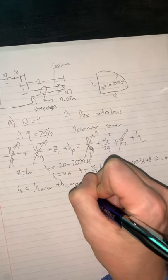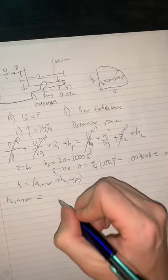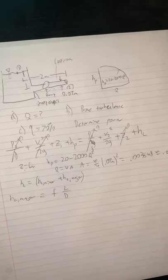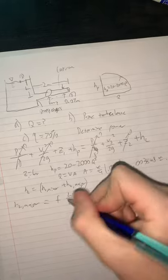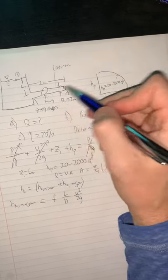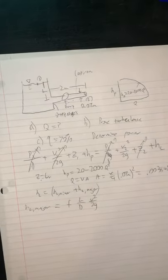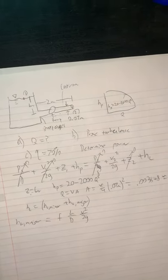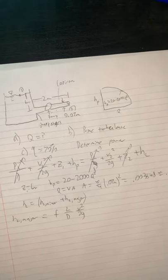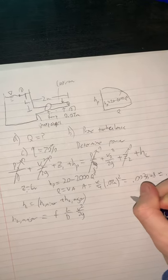Our head losses is broken down into head loss minor plus head loss major. The equation for major is the friction factor times length over diameter times V²/2g. We know length is 2 meters, diameter is 0.07 meters. The only thing we don't know is our friction factor. Our friction factor we get from the Moody diagram, which is based on Reynolds number, which we don't know. But we are told it's fully turbulent so we can work off of that. It's also based on roughness factor over diameter.